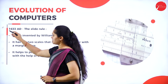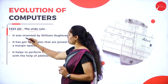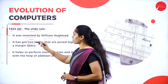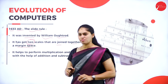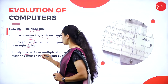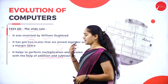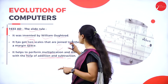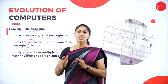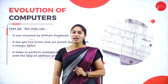In the year 1633 AD, the Slide Rule was invented by William Oughtred. It consists of two scales joined together with a margin space between them. By merging the two scales, multiplication and division could be performed with the help of addition and subtraction — since repetitive addition gives a multiplication result. The Slide Rule helped perform arithmetic operations efficiently.